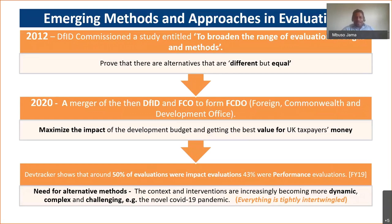That 2012 DFID study pointed toward theory-based evaluations and showed an increased appetite for case-based studies, while still recognizing the need for causal inferences or attribution at a higher level. Fast forward to 2020, we saw a merger between DFID and the FCO to form the FCDO in September. This created a more close link between development, trade, and diplomacy, calling for more rigorous demonstration of benefits — how can we maximize the impact from every pound spent, especially on the most vulnerable populations.